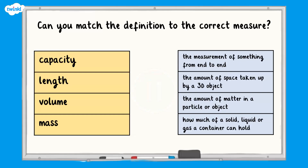All finished? Well done, let's take a look at the answers. Capacity is how much solid, liquid, or gas a container can hold. Length is the measurement of something from end to end. Volume is the amount of space taken up by a 3D object. And mass is the amount of matter in a particle or object.